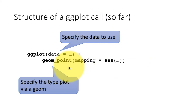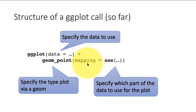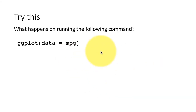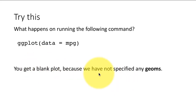ggplot provides many geoms — for each kind of plot you want, you can specify a geom. In the mapping, you specify what part of your data connects to what aspect of the plot. Try running ggplot(data = mpg) all by itself and see what happens. What you will see is a blank plot, because anything visible has to be specified by way of geoms — this command has no geoms, so you don't see anything visible.